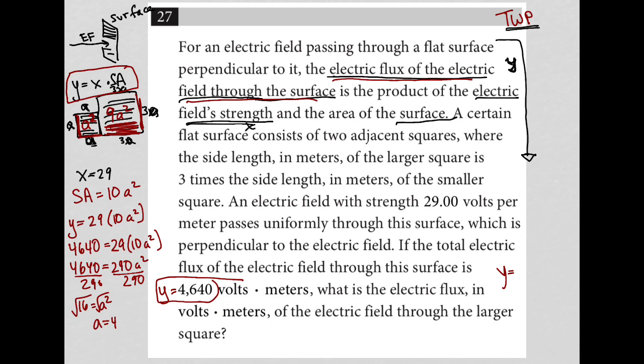So I have Y equals, well, what do I know about Y? I know that Y is always just equal to X, which is the electric field strength, which we already were told is 29 times the surface area. But the surface area in this case is just through the larger square. So the surface area of the larger square is 9A squared. So times 9A squared.